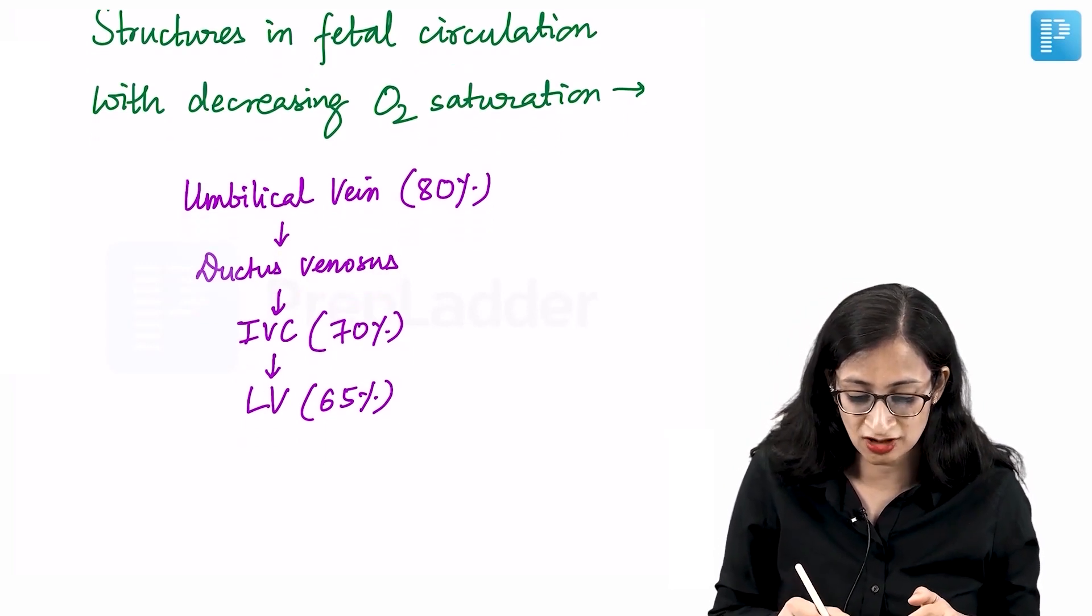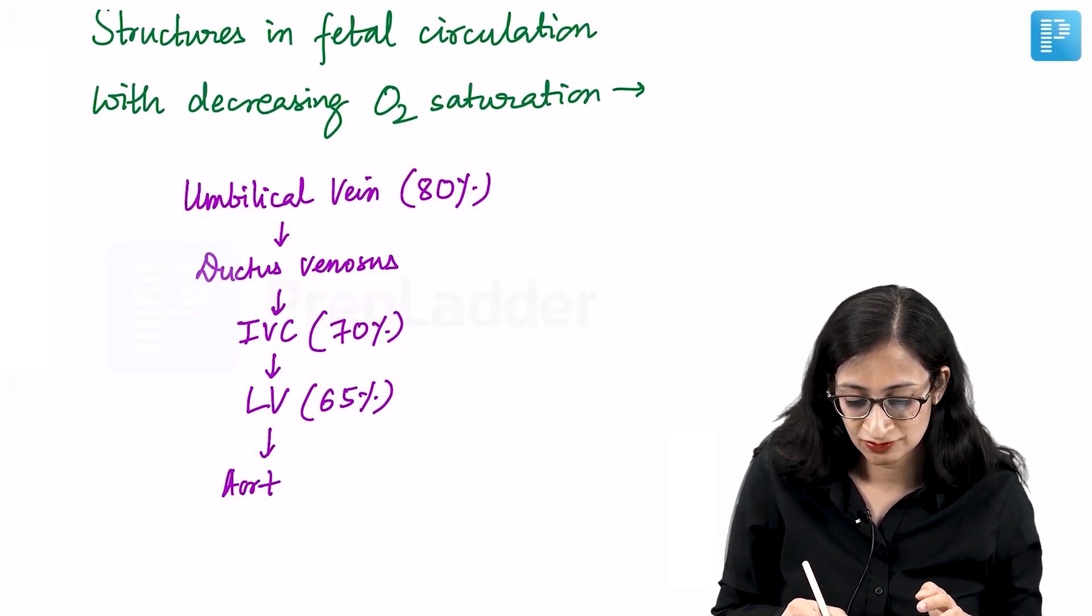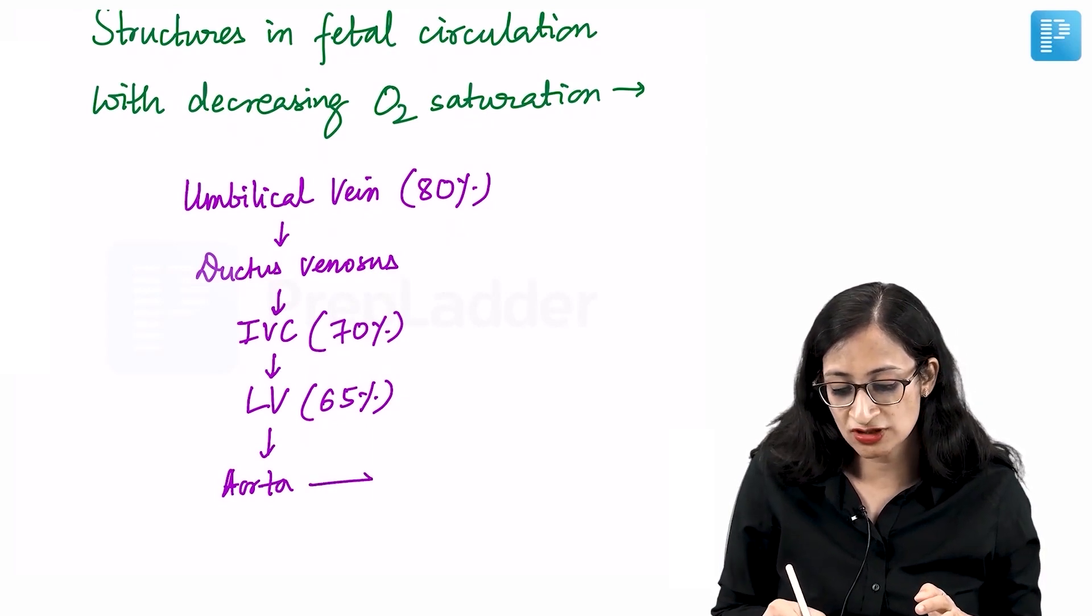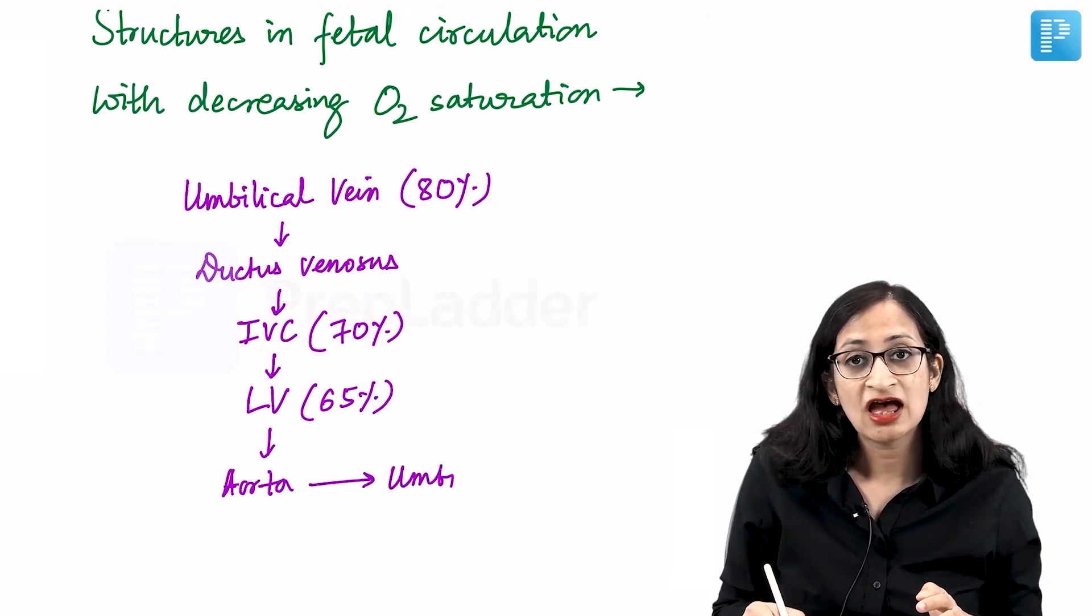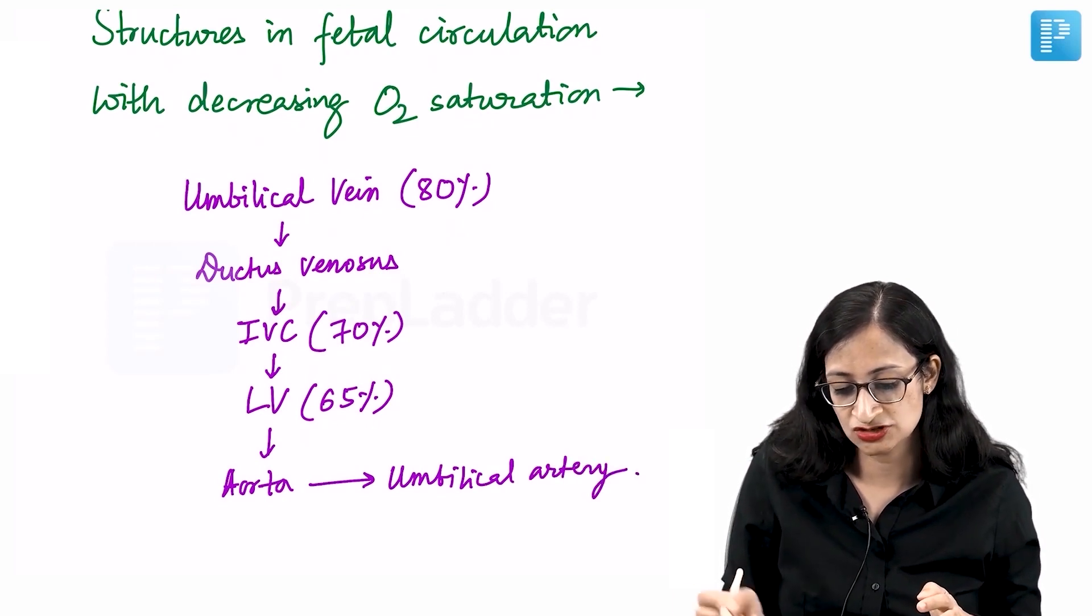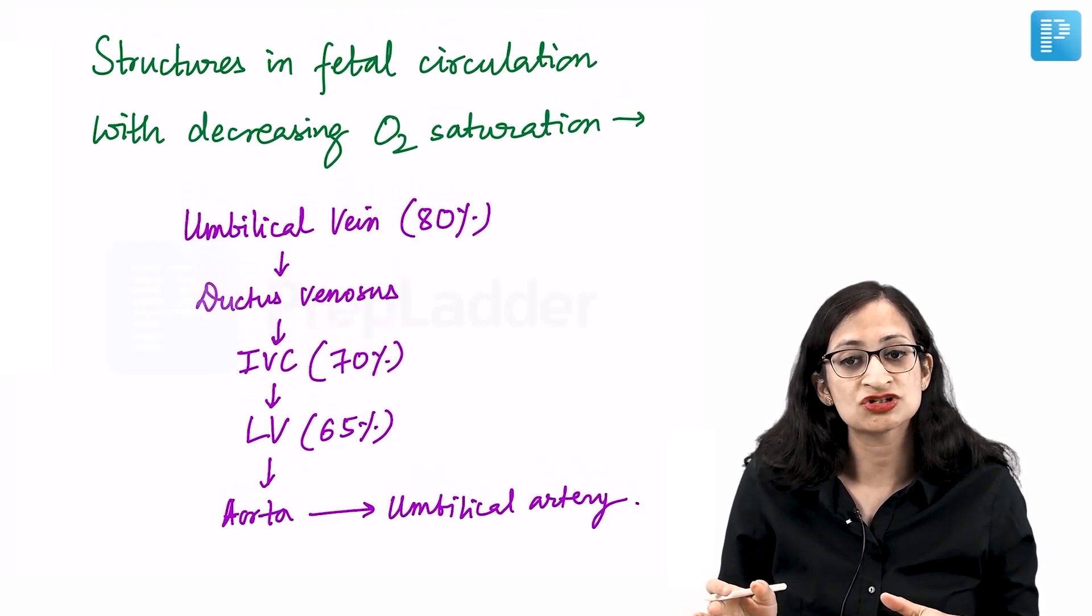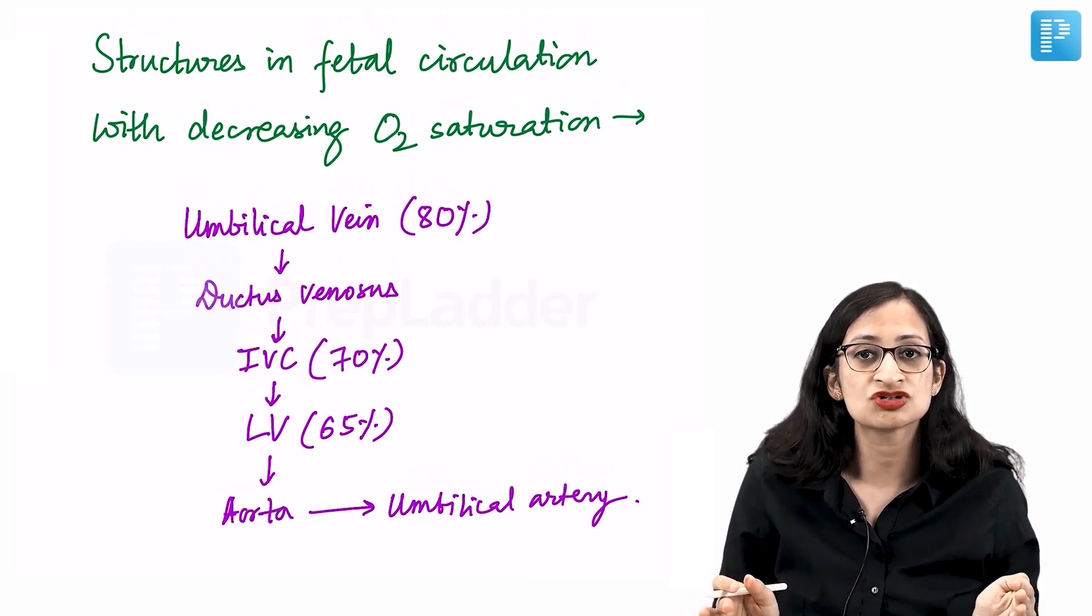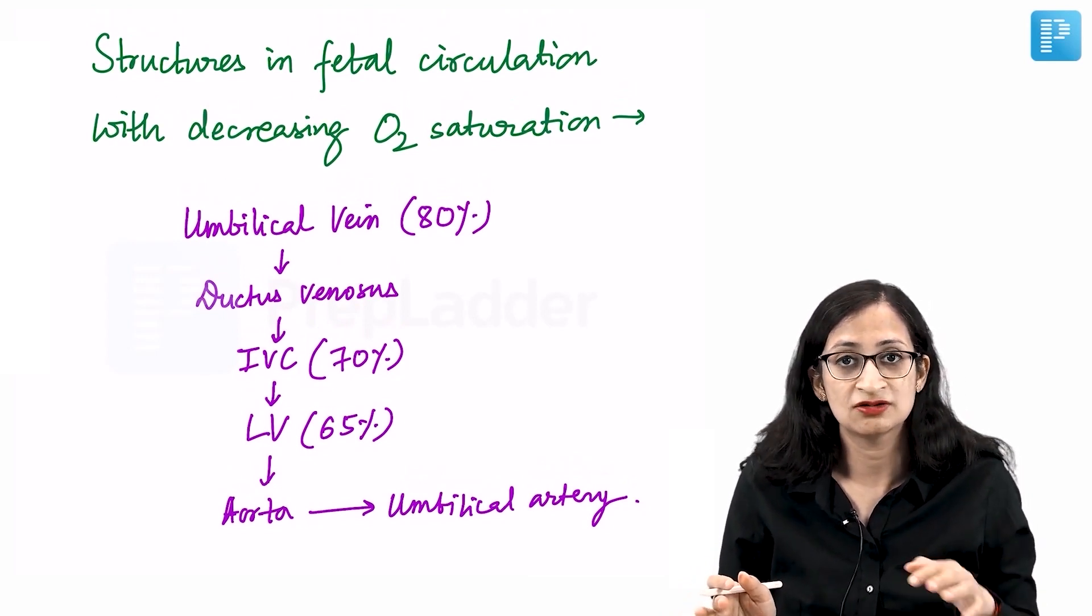From the left ventricle comes the aorta, and from the aorta comes the umbilical artery, which finally goes back to the placenta for oxygenation. So minimum oxygen saturation is in the umbilical artery, while maximum oxygen saturation is in the umbilical vein.